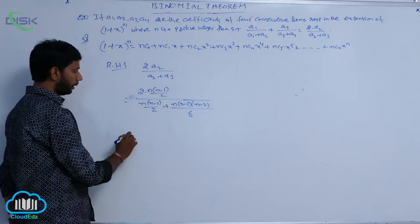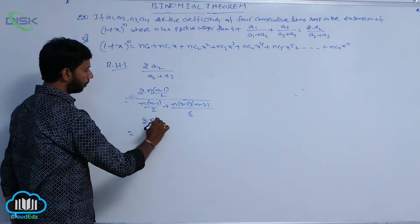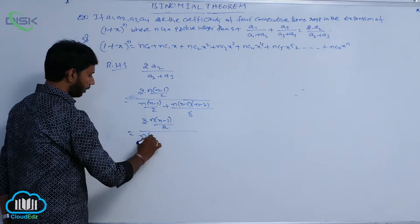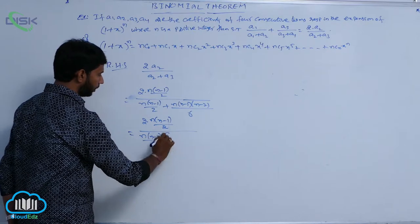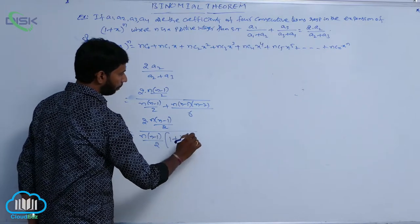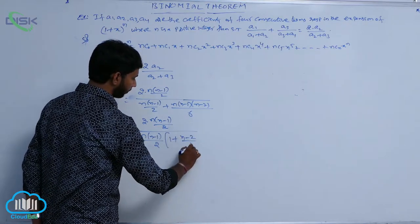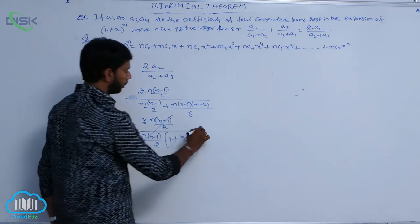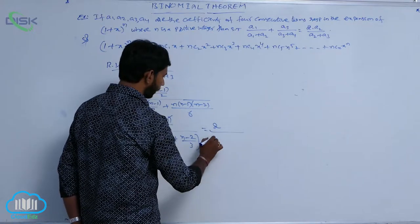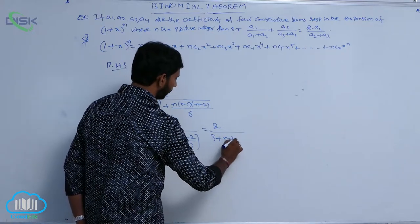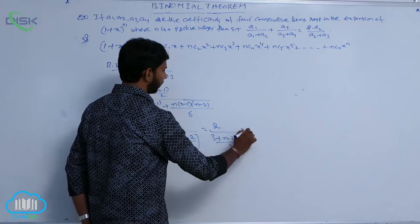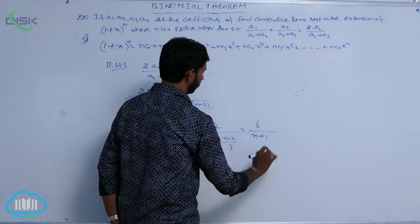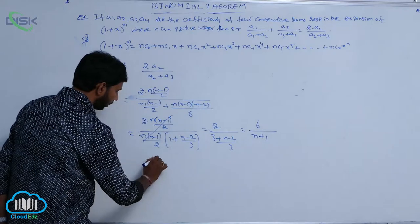In the numerator and denominator, 2 of N(N-1)/2 is common. In the denominator, N(N-1)/2 is common. That gives 1 plus (N-2)/3, and N(N-1)/2 gets cancelled. That is equal to 2 by, taking LCM, that is (3 plus N minus 2) by 3, which equals 6 by (N+1). Therefore LHS is equal to RHS.